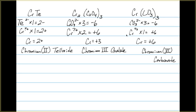In each one of these, chromium has a different oxidation state. So if we were to simply say chromium telluride, we wouldn't know. Is it chromium with a 2 plus? Is it chromium with a 3 plus? Or is it chromium with a 6 plus oxidation state?